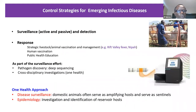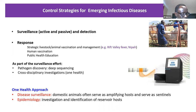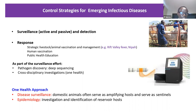In short, the control strategy involves creating capacity, engaging in surveillance and detection so we know when things happen in a timely fashion. For some animal diseases, this includes animal vaccination to prevent disease transmission to humans, human vaccination, public health education, and pathogen discovery through deep sequencing — discovering pathogens before they strike. Cross-disciplinary investigations — the One Health approach — and identification of reservoir hosts through surveillance are all essential components.